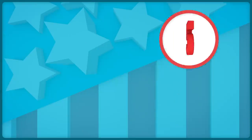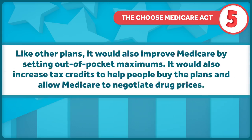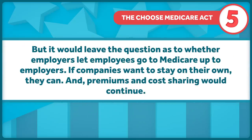Senators Merkley and Murphy have proposed the Choose Medicare Act. Their plan would allow anyone on the individual market to choose and purchase a Medicare Part E plan. It would work like traditional Medicare. Like other Medicare for All plans, it would also improve Medicare by setting out-of-pocket maximums, which don't exist now. It would also increase tax credits to help people buy the plans and allow Medicare to negotiate drug prices. But it would leave the question of whether employers let employees go to Medicare up to employers. If companies want to stay on their own, they can. And premiums and cost-sharing would continue.